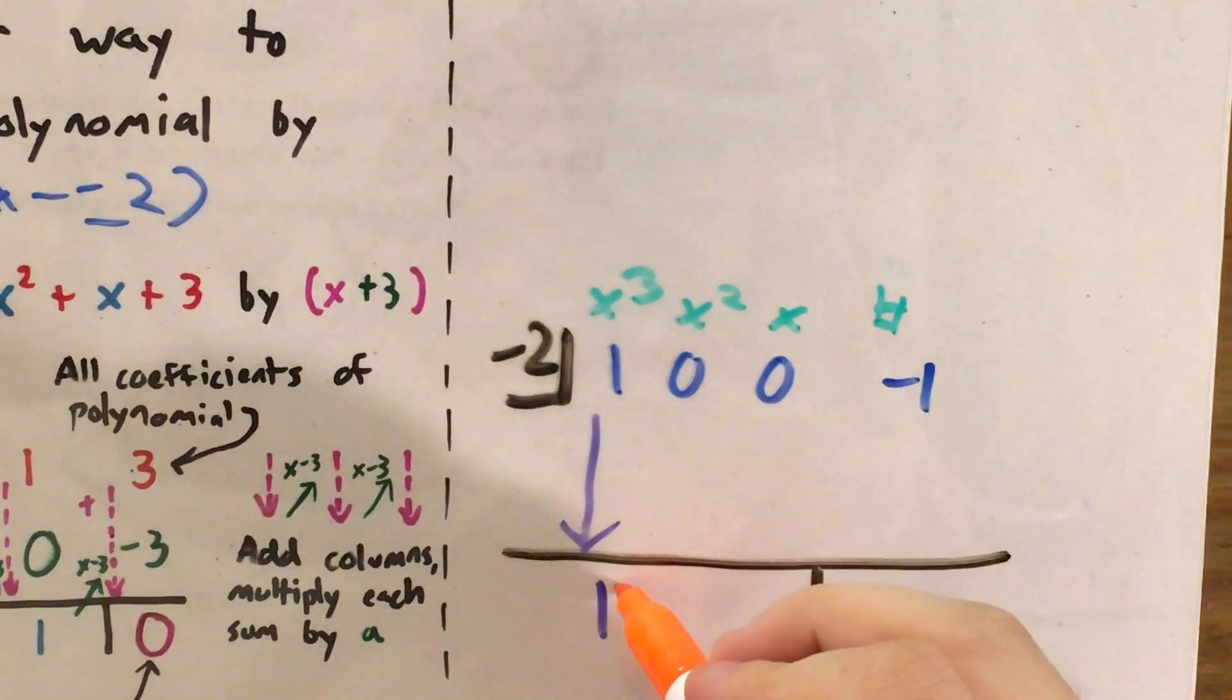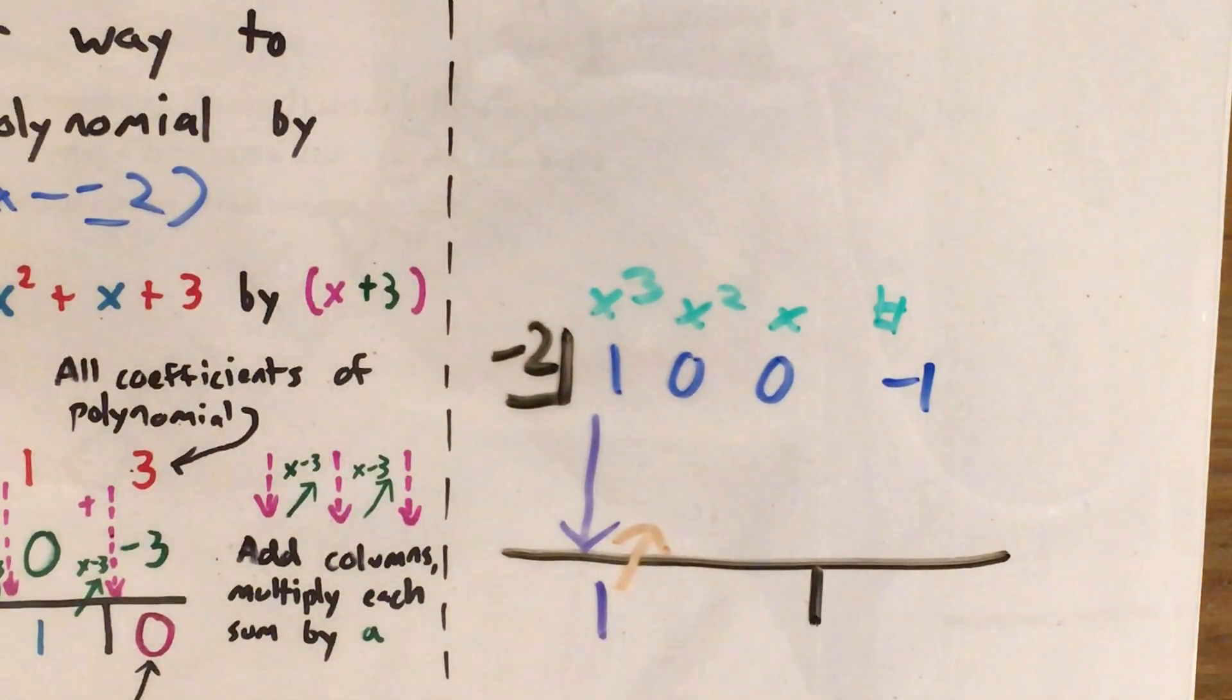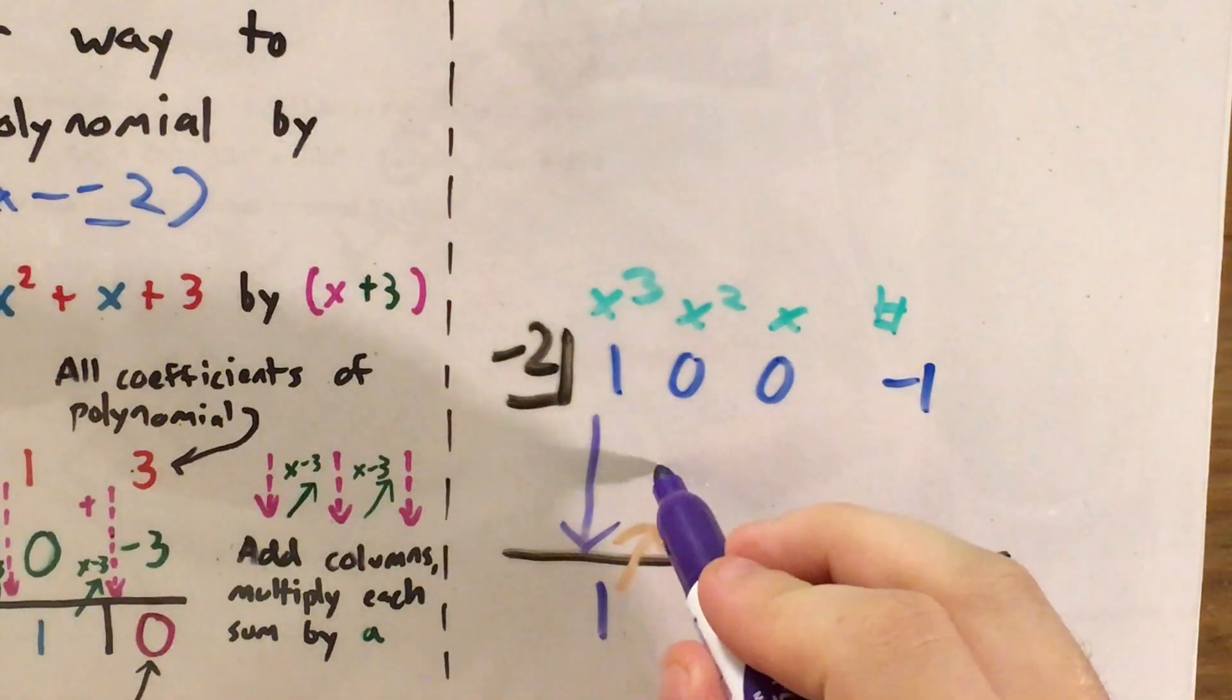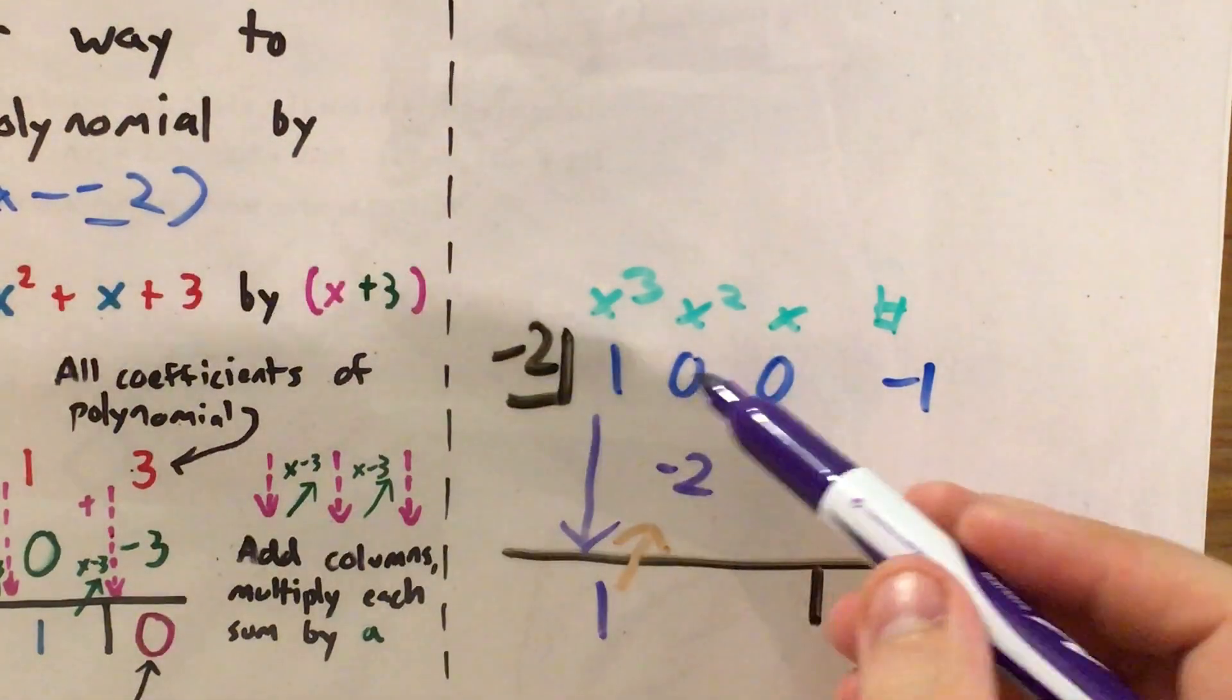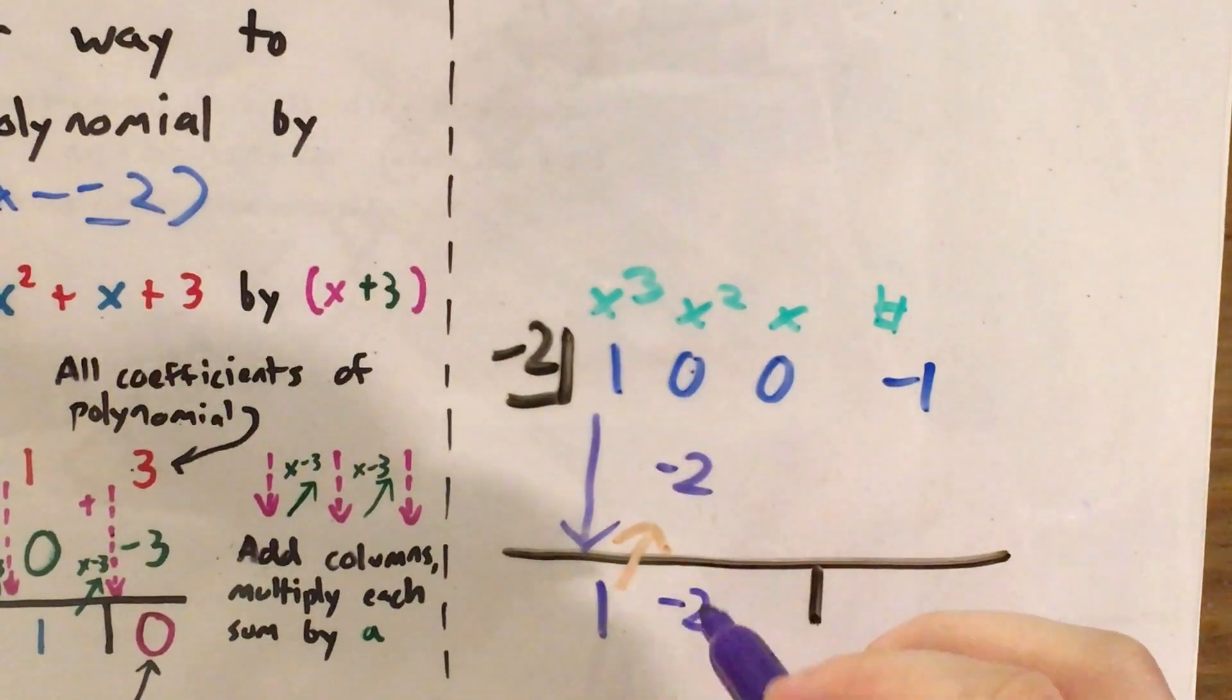And now as I go diagonal and up, I'm going to multiply by negative 2, the number I'm testing. So 1 times negative 2 is negative 2. And then I add again. 0 plus negative 2 is negative 2.